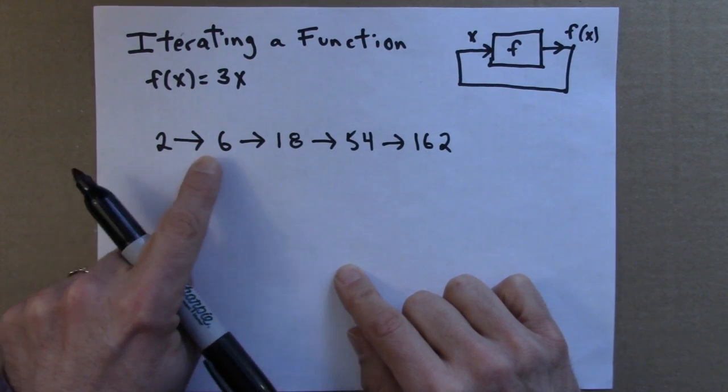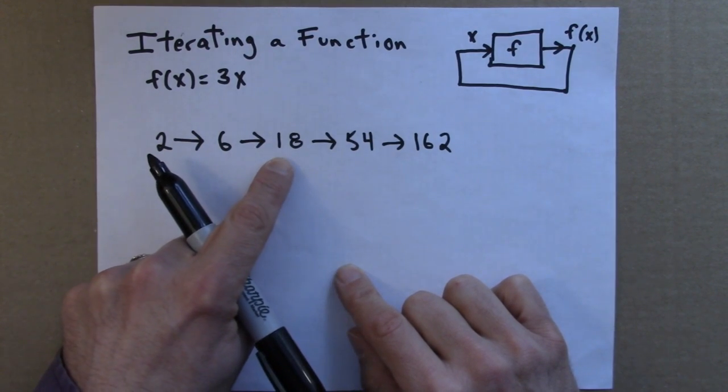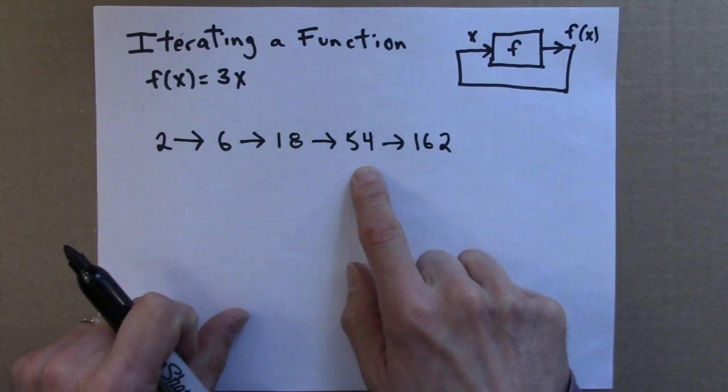So I start with 2, I triple it to get 6, then I triple 6 to get 18, triple 18 to get 54, and so on.